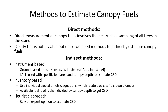To estimate canopy fuels, direct measurement would require cutting down all trees, removing branches, and weighing everything individually — an enormous amount of work, not feasible at scale, and it destroys the forest in the process. So we need to estimate these things indirectly.